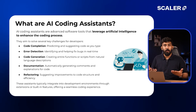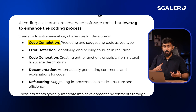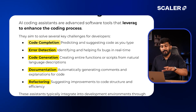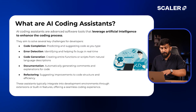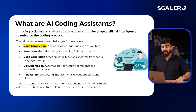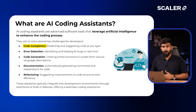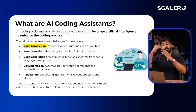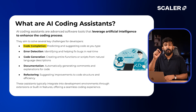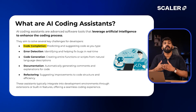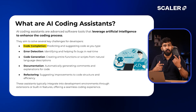They aim to solve a lot of problems: code completion, error detection, code generation, documentation, and refactoring. Code completion is just predicting and suggesting code as you type. We already had autocomplete in a lot of IDEs, but now with AI-powered code completion it's much more advanced — it can complete an entire block of code. Autocomplete would just suggest the next word or line, but with AI you can generate multiple blocks of code with just one or multiple prompts.